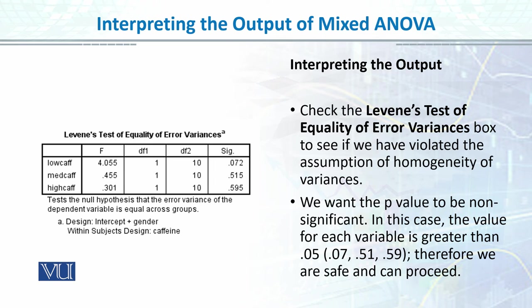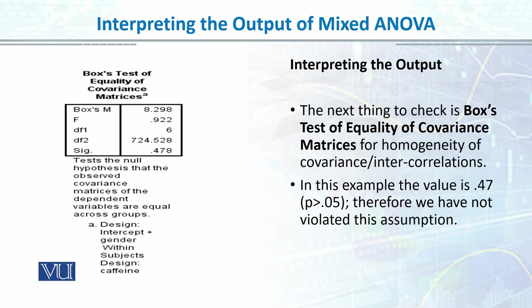What do we want to see? That our value is non-significant, and the significance threshold is 0.05. Levene's test checks equality of error variance, and Box's M test checks whether we violated the assumption of homogeneity of covariance across our 3 within-group levels. We want the P value to be non-significant. In this case, all 3 values are non-significant, so our assumptions are fulfilled and our data meets the assumptions of equality of variance.